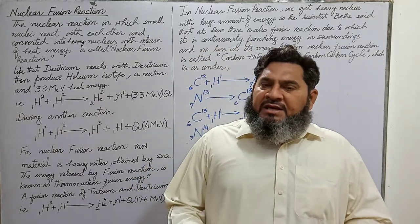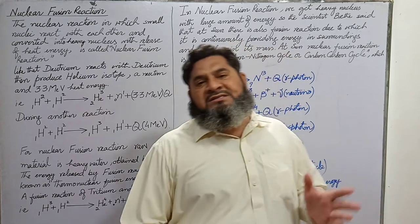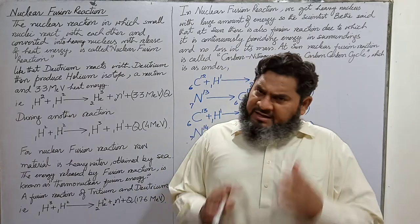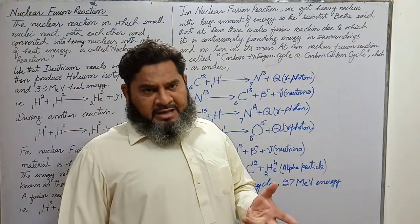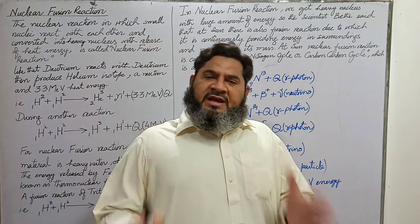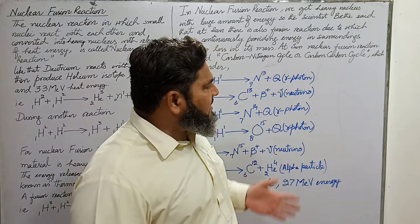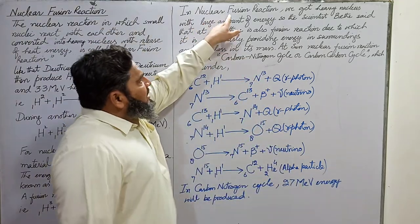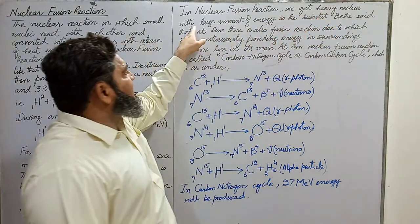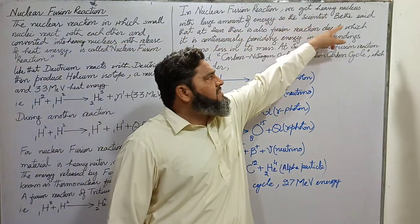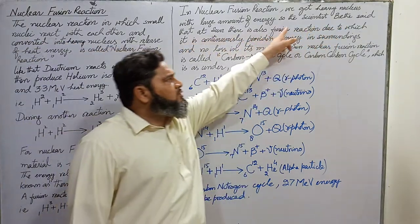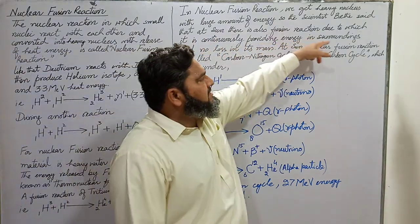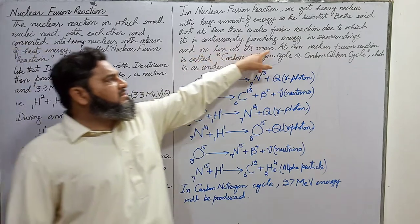Scientists have supposed that the sun maintains its mass while continuously giving out energy. Scientists have said that the sun has nuclear fusion reactions. That is why it is giving out energy while the mass of the sun is maintained. In nuclear fusion reaction we get a heavy nucleus with a large amount of energy, so scientists say that at the sun there is a fusion reaction, due to which it continuously provides energy to its surroundings with no loss in its mass.